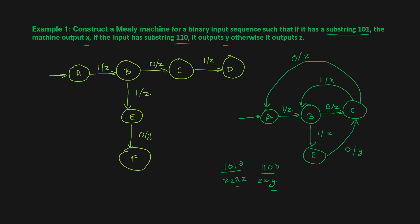We still need to handle a few transitions. If in state e you get 1, you send it back to state e itself and the output is z. Also, for state a, if you get input 0, you stay in state a and the output is z. Now I think we have covered everything mostly.